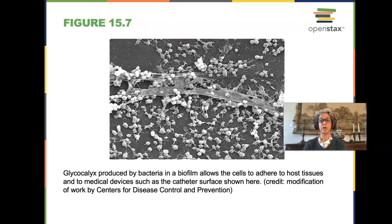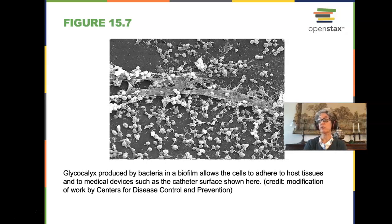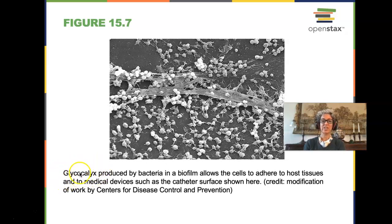Biofilms form when bacteria use quorum sensing to signal each other once they reach a high population density. With high numbers, they can stick to host tissues or medical devices and secrete chemicals that allow invasion into deeper tissues. The structure that allows them to stick is the glycocalyx, or capsule — glyco meaning sugar or polysaccharide, and calyx meaning covering.